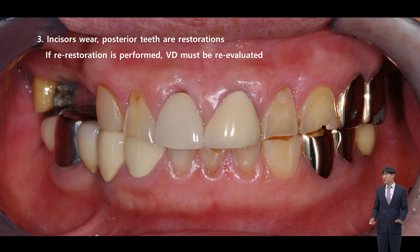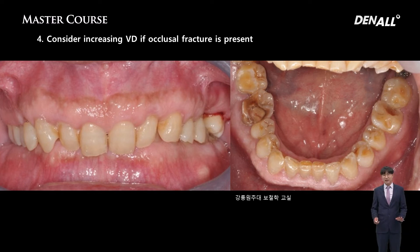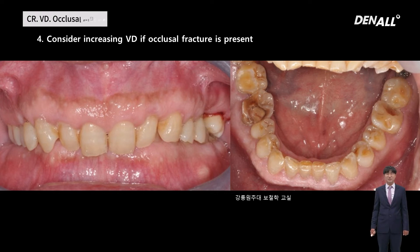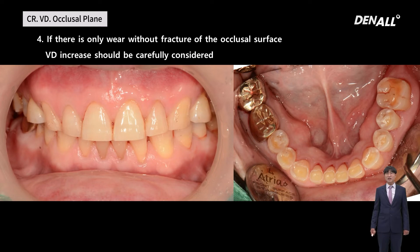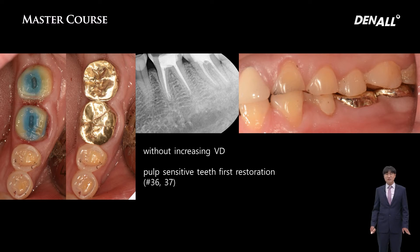In this case, we need to consider whether VD is really lost or compensation for VD is necessary. We need to consider increasing VD if occlusal fracture is present, as the speed of attrition cannot catch up with the speed of extrusion. So if there is occlusal fracture, we need to think differently. If there is only wear without fracture of the occlusal surface, VD increase should be carefully considered. If there is only wear without occlusal plane fracture, there is no obvious reason to increase VD if there is insufficient space — you can just provide a posterior step, like gold crowns at numbers 36 and 37.